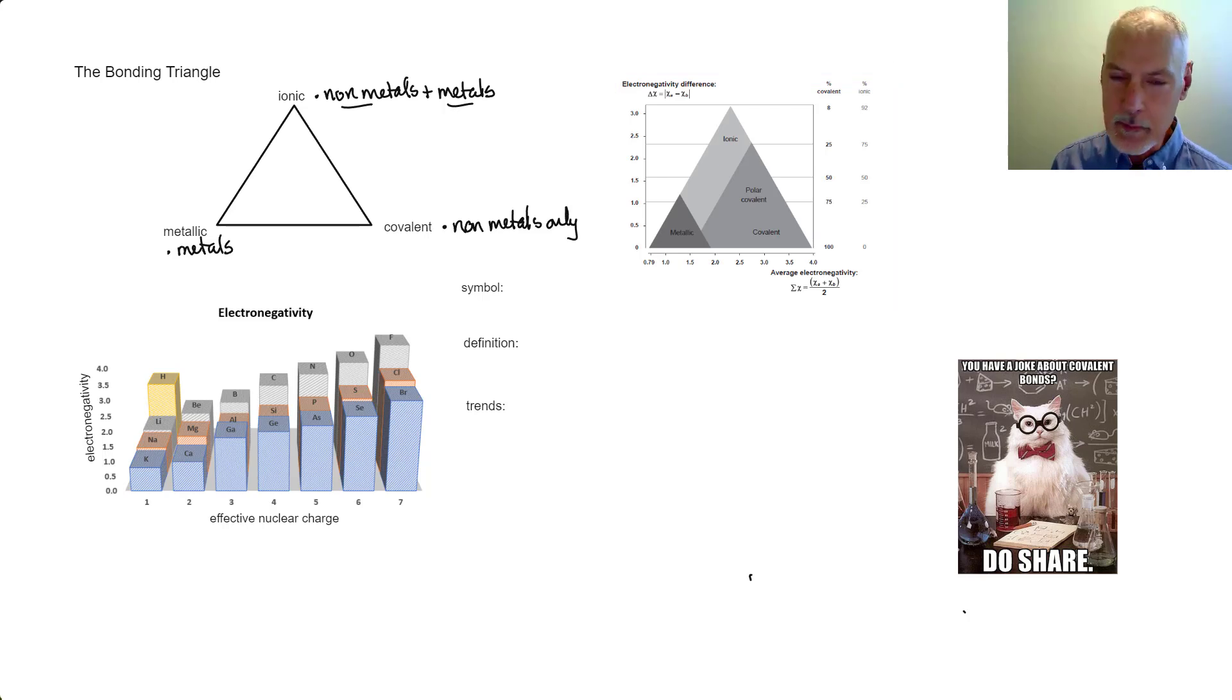That approach involves the use of something we call the bonding triangle, which explores some of the characteristics of either metallic, covalent, and ionic substances. You'll see that it's based upon ideas around electronegativity. So it's probably worthwhile here to explore some of the properties of electronegativity. First of all, its symbol is chi, and you can see it present in the equations down here. Its definition is the attraction for the electrons in a bond.